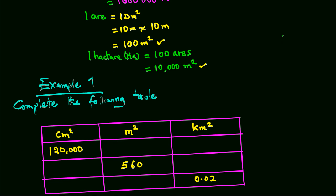So our first task is to convert 120,000 square centimeters. So to convert square centimeters to square meters, we need to divide whatever the value by 10,000. So this would give us a value of 12 square meters.